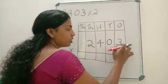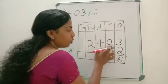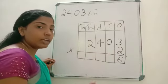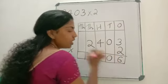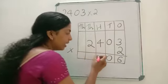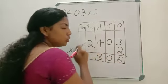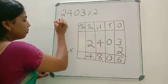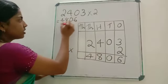2 into 3 is 6. Next, 2 into 0 — 0 multiplied by any number is 0 itself, so 2 into 0 is 0. Now, 2 into 4: 2 into 4 is 8. Then, 2 into 2 is 4. So the answer is 4,806.